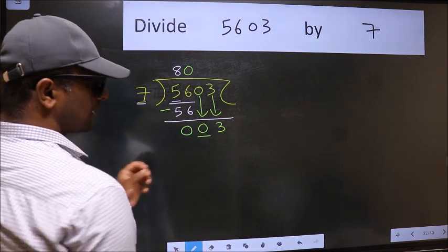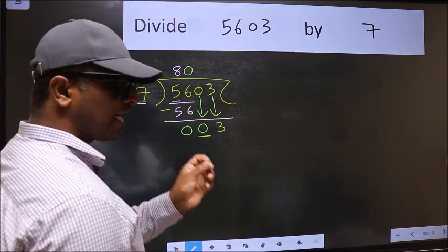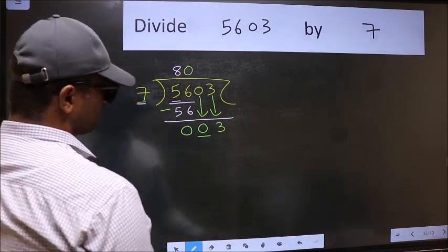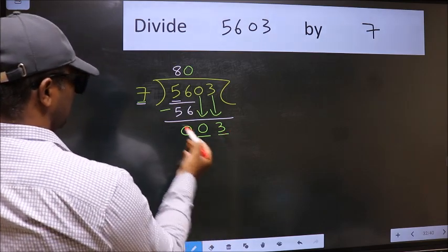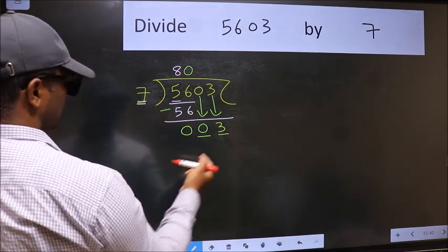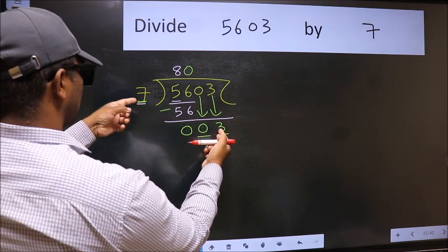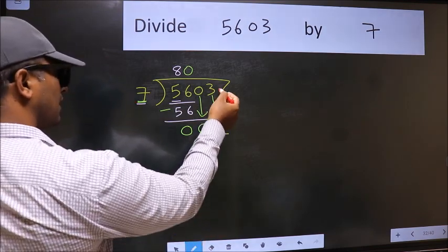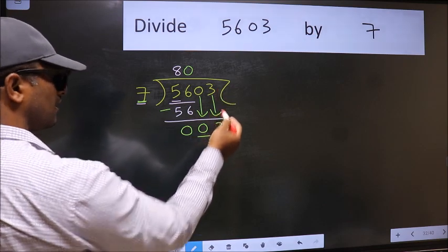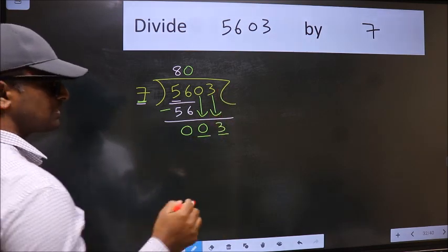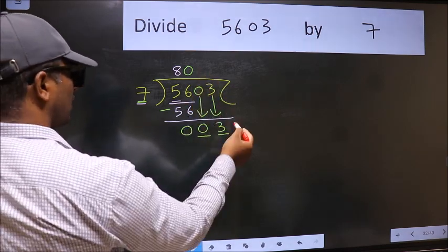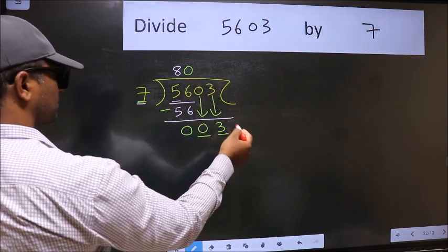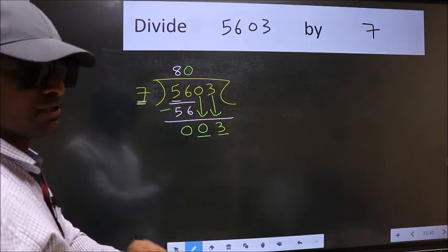After this step, the mistake happens. And the mistake is this. Here we have 3 and here 7. 3 is smaller than 7, and we don't have any more numbers to bring it down. So what many do is they directly put dot take 0, which is wrong.